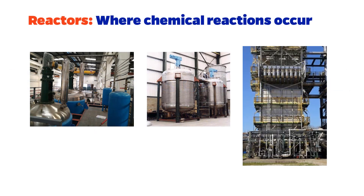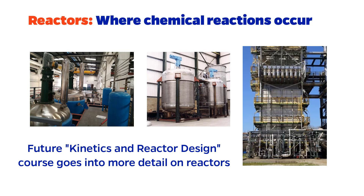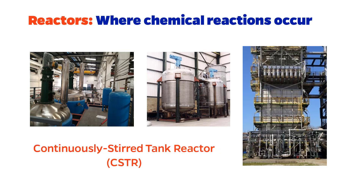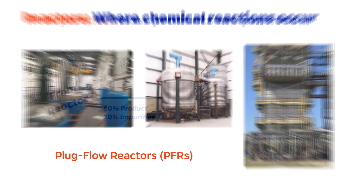Reactors are arguably the most important part of any chemical process, because, as the name implies, reactions occur there. Many products made by chemical engineers are not naturally occurring, so they must be generated via chemical reactions. We will only consider generic reactors in MEB, but your future course in kinetics and reactor design will cover the different types of reactors, including continuously stirred tank reactors, or CSTRs, and plug flow reactors, or PFRs.